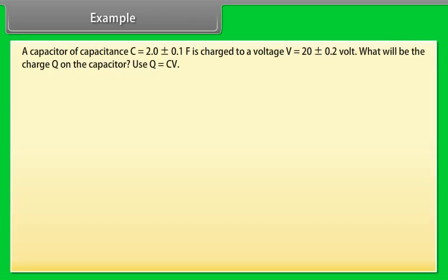Example: Let's take an example of errors. A capacitor of capacitance C = 2.0 ± 0.1 microfarad is charged to a voltage V = 20 ± 0.2 volt. What will be the charge Q on the capacitor? Use Q = CV. Let us see the solution: Q = CV. On calculating, we get Q = 40 × 10^-6 coulomb.